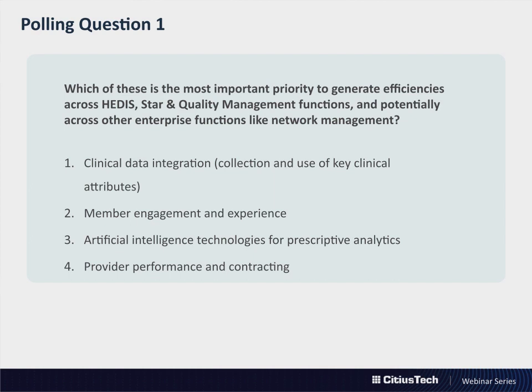The poll will appear on the top right-hand side of your screen, so go ahead and click out of full screen mode in order to see the poll pop up. The question reads: which of these is the most important priority to generate efficiencies across HEDIS, STAR, and quality management functions, and potentially across other enterprise functions like network management? The four choices are: clinical data integration (collection and use of key clinical attributes), member engagement and experience, artificial intelligence technologies for prescriptive analytics, and provider performance and contracting. Of those four choices, just choose one. We'll give it just a few moments before we close the polling out, and we appreciate your answers and your feedback.